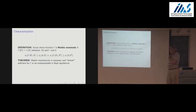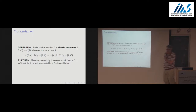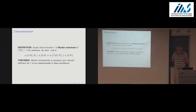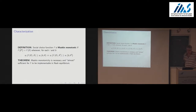There is a monotonicity condition — Maskin monotonicity — which is necessary in order to fully implement the social choice function. It's almost sufficient, meaning we can find relatively weak additional conditions. Eric talked about three players and the no-veto condition. You could come up with other conditions under which Maskin monotonicity is sufficient.